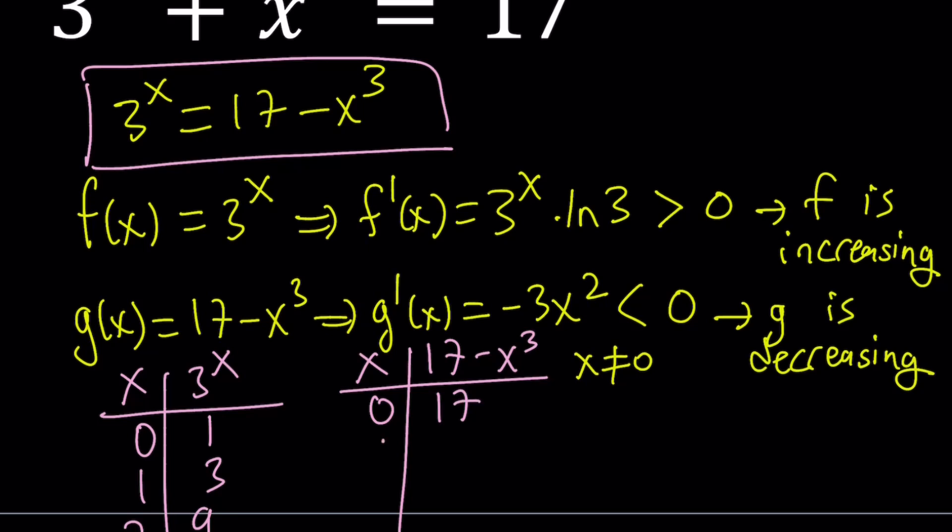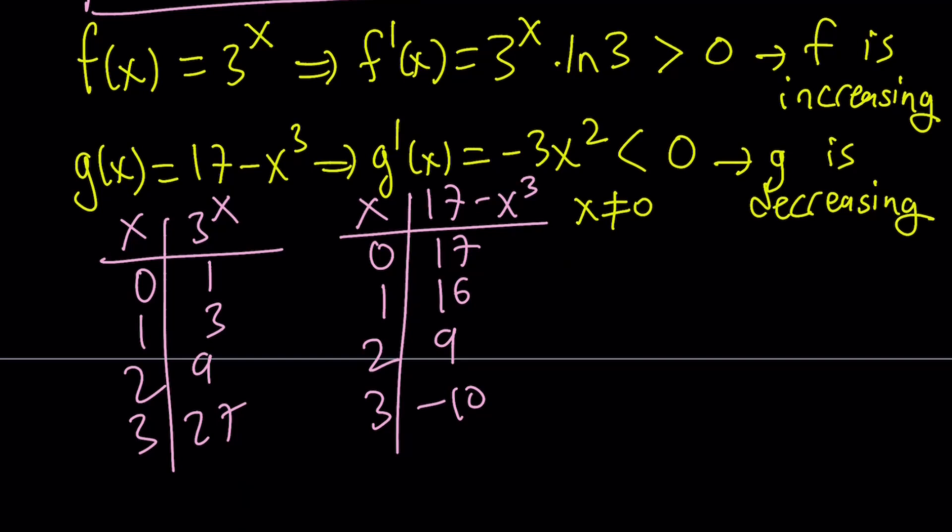For 0, this is 17. For 1, this is 16. For 2, this is going to be 9. For 3, this is going to be negative 10. Notice that we already talked about it. The x values, the y values are increasing here, and the y values are decreasing here. And obviously, at some point, they're going to be equal, and that is when x equals 2.